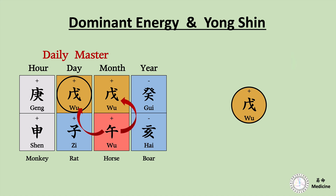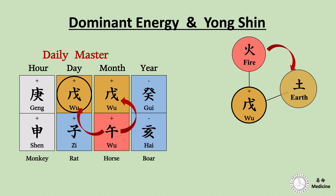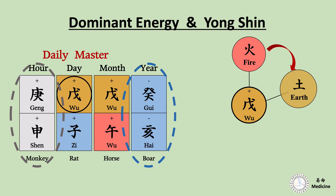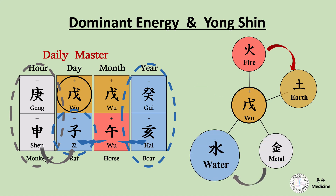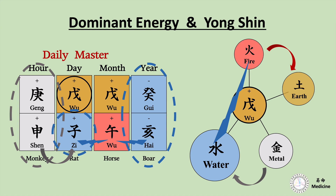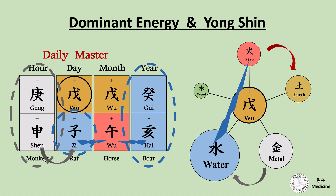So I will visualize fire and Earth with maybe these sizes of circles. However, if we see other characters, here is big metal energy, and here's big water energy, and here's another water that is strongly supported by this metal. Therefore, these waters are controlling this fire, making fire weaker than I thought, even though it is in fire month. So I will draw metal and water with this size of circles. And because water over-controls fire in this chart, I might change the size of fire and Earth relatively smaller. And there's no wood in the chart, so I will draw it with the smallest circle.